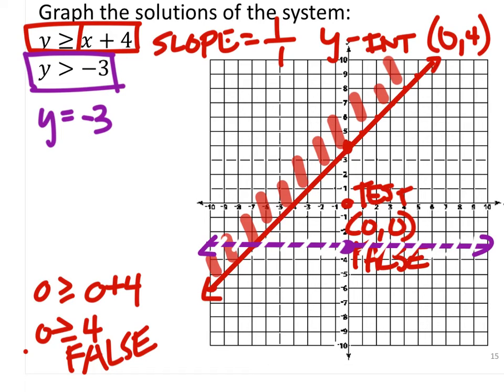And we can test the point again, 0, 0. So we're going to test 0, 0, which means I can only replace the y, and 0 is greater than negative 3. That's true.